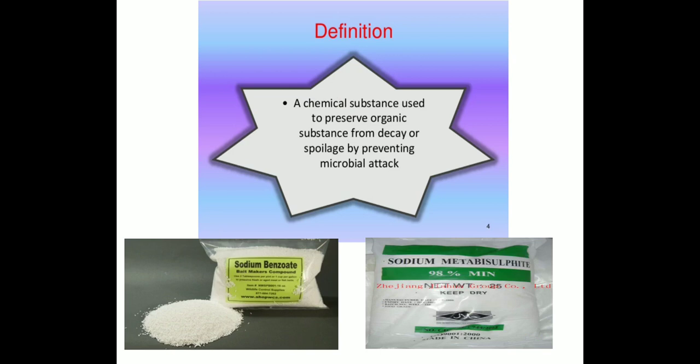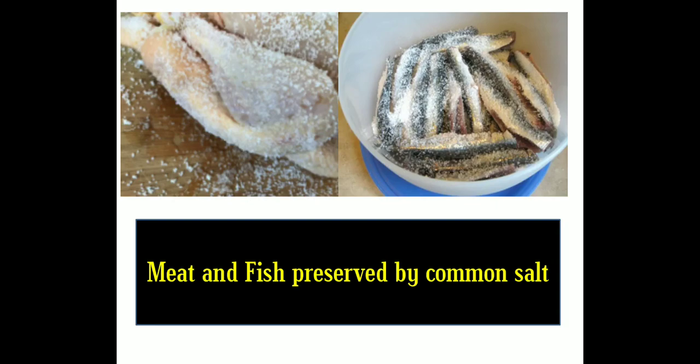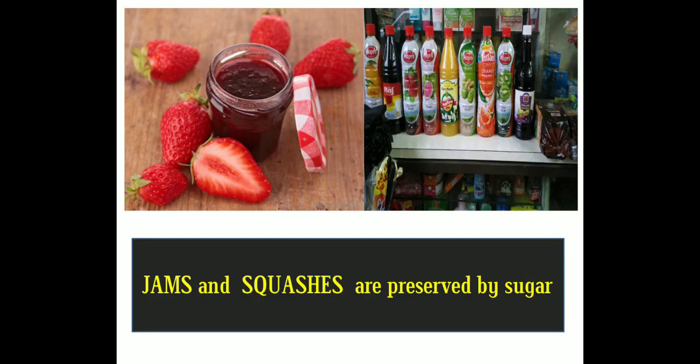The second method is preservation by common salt. It has been used to preserve meat and fish for ages. Meat and fish are covered with dry salt to check the growth of bacteria. Salt is also added to preserve amla, raw mangoes, tamarind, and similar items.